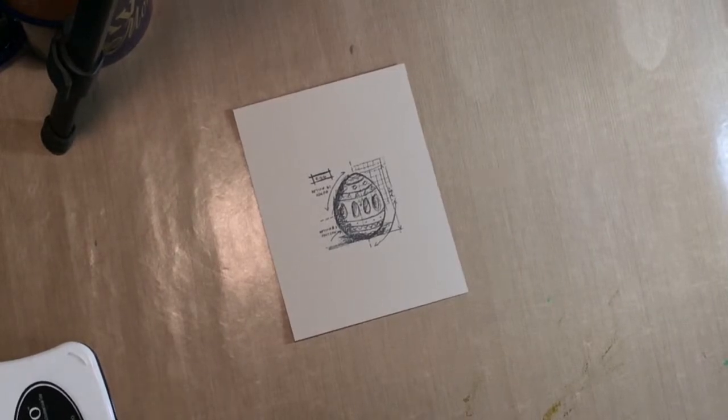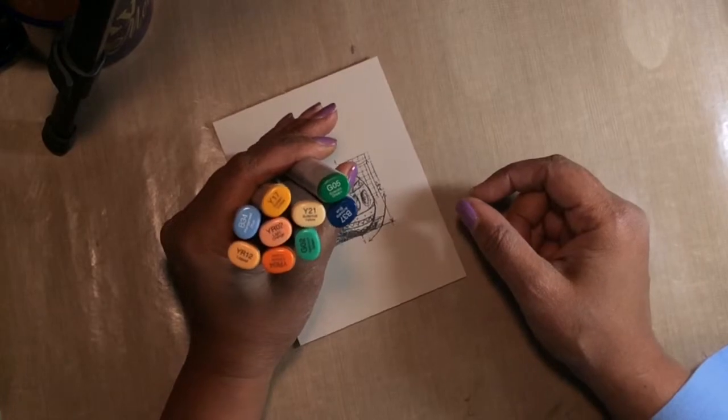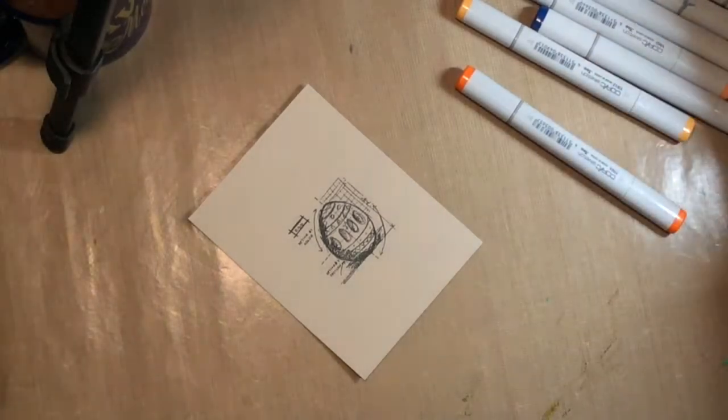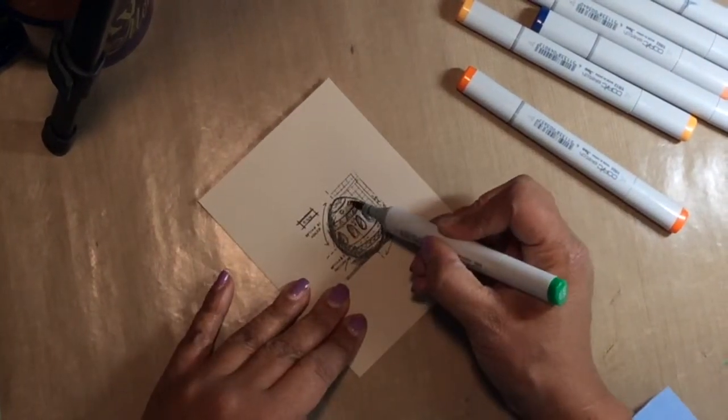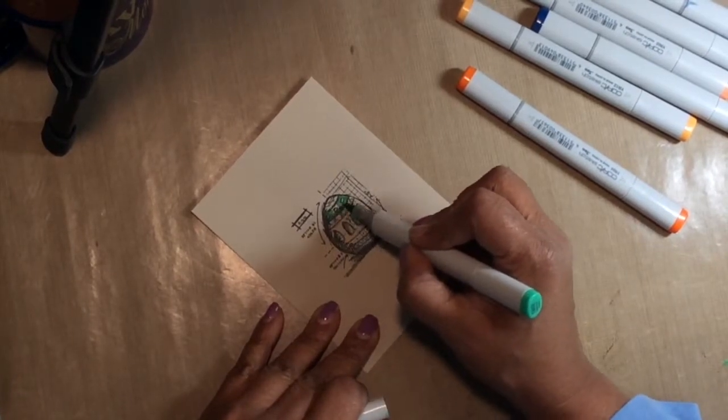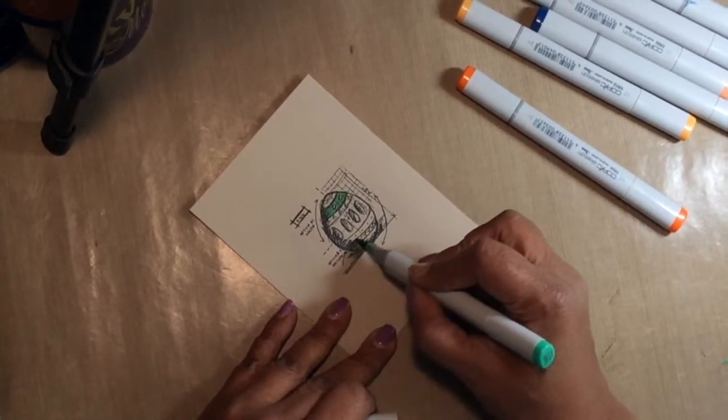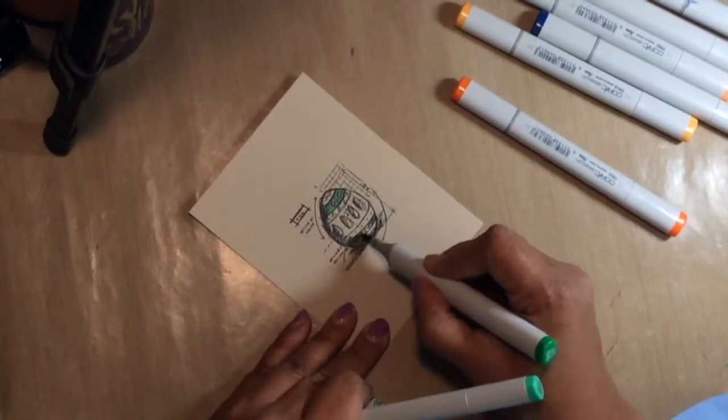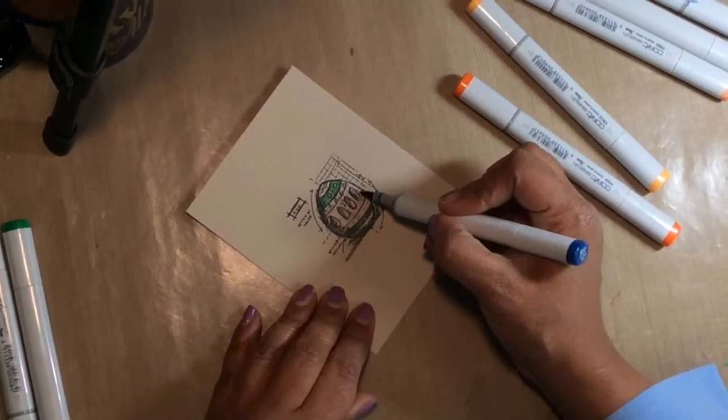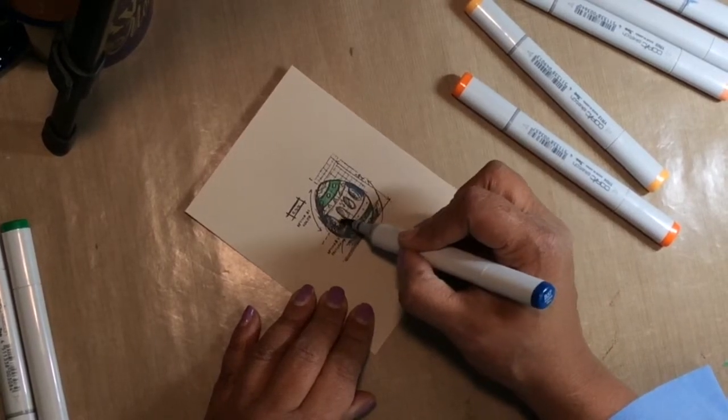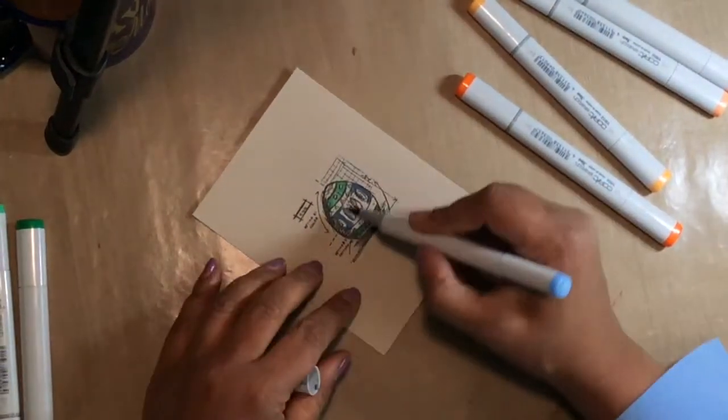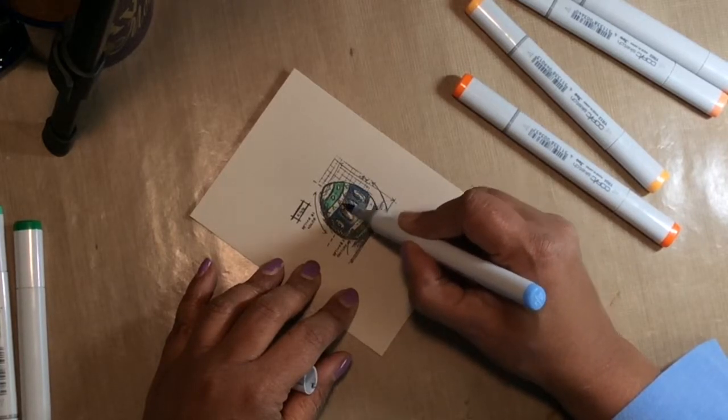So I'm going to be using a small amount of Copic markers, just a small variety, to shade in some of these colors. Staying away from the pinks and reds, I'm going for a more masculine card, more muted colors. So I'm going to use blues and oranges and some yellows and green. I'm going to go ahead and color this egg in.